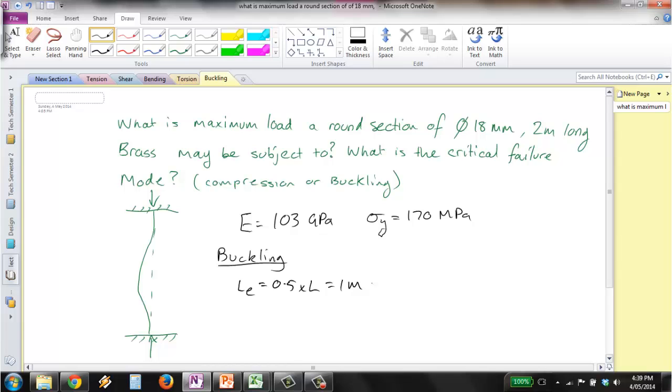Also important, since we need to work out the slenderness ratio which is LE over radius of gyration, we need to determine that radius. From looking up for a solid round section, we get that it equals the diameter divided by 4. For this section that's 4.5mm or 0.0045m.